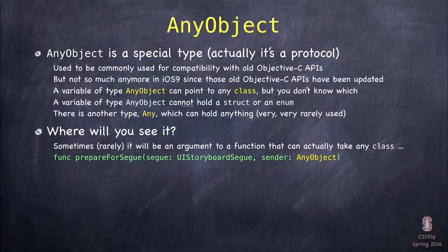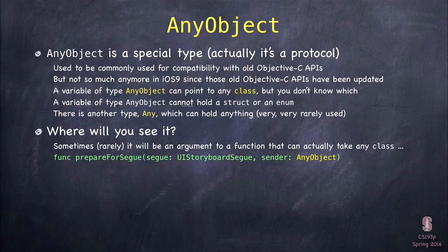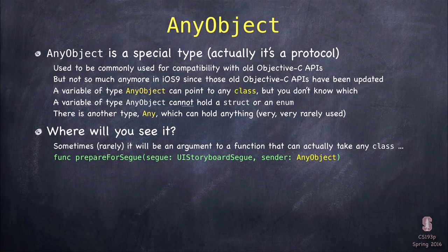Where will you see AnyObject? You'll sometimes see it in a method where one of the arguments truly can be more than one different kind of class. For example, you'll see on Wednesday prepareForSegue, which prepares for transitions from one MVC to another. The sender — the object that initiated the transition — could be lots of different kinds of objects: it might be a button you clicked on, a row in a table, or some custom code inside your controller. So this sender has to be AnyObject because we don't know if it's a button or a table row.